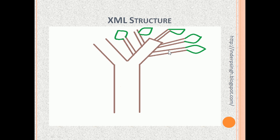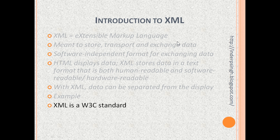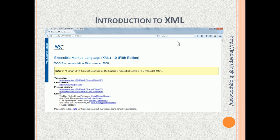Looking at the emails XML document example: the root corresponds to 'emails', the child element corresponds to 'message', and message has child elements of 'to', 'from', 'subject', 'body', and 'attachment'. The leaves are the data — for 'to' we have alex@example.com, for 'from' we have brandy@example.com, for 'subject' we have 'how are you', for 'body' we have 'Hi, let's catch up sometime', and there is no data in the attachment. One other thing to remember is that XML is a W3C standard, and you can visit the w3.org website to see the XML standard details.